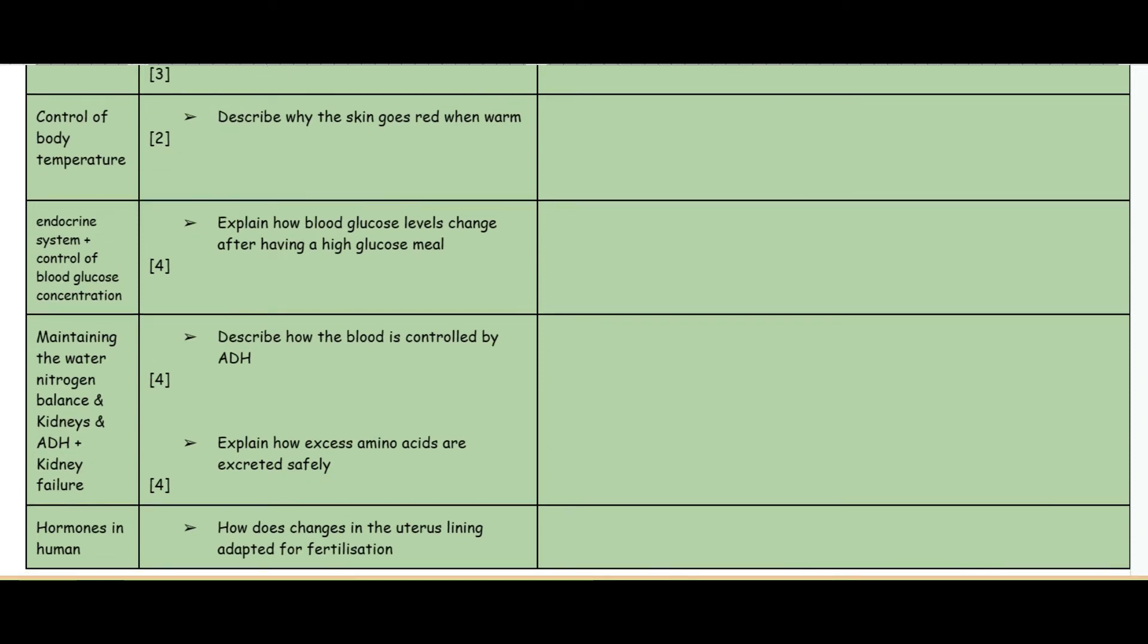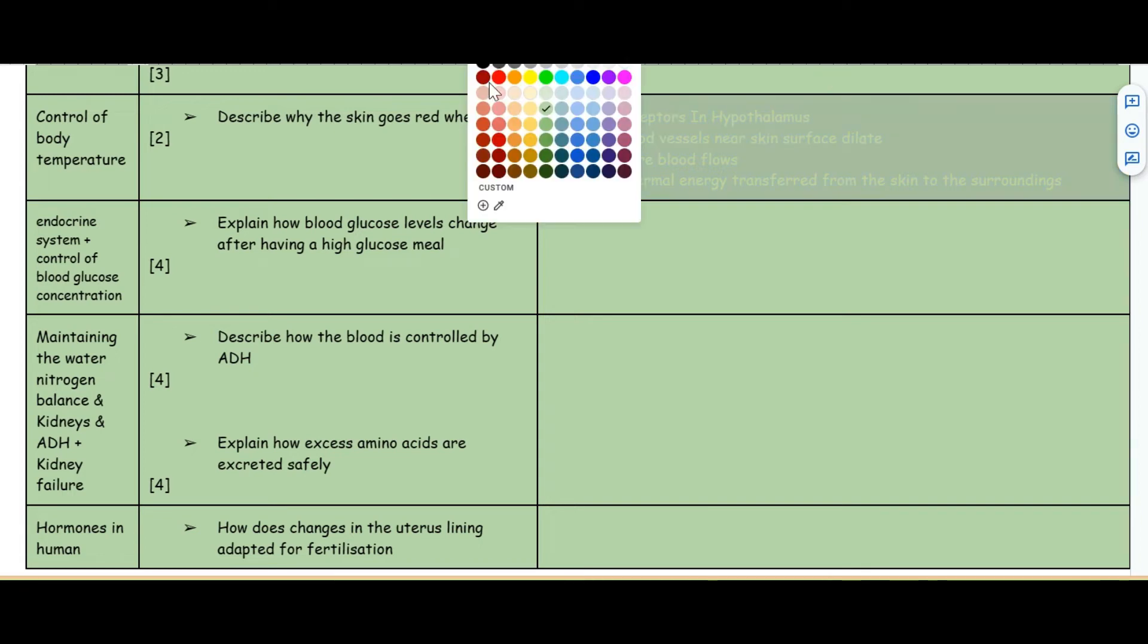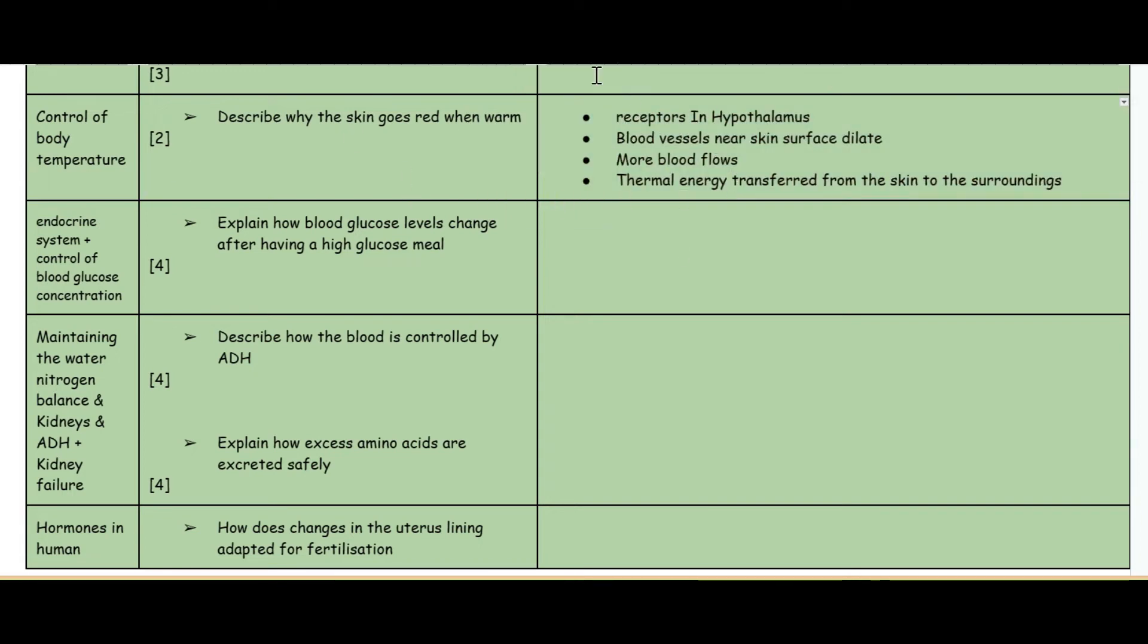This next question is about control of body temperature. Describe why the skin goes red when warm. You've got the receptors in the hypothalamus, the temperature part of the brain. The blood vessels near the skin's surface dilate allowing more blood to flow. The reason is so that thermal energy can be transferred from the skin to the surroundings, effectively cooling yourself because you want heat to go out of your body to dissipate. Because the blood vessels go near the skin surface, you've got that vasodilation happening.